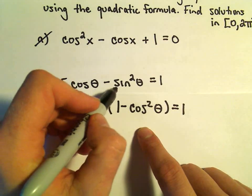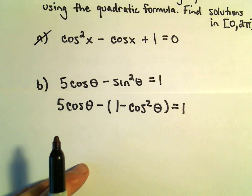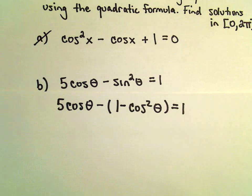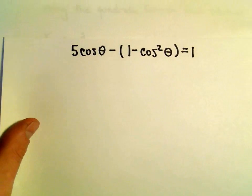We're just using an identity for the sine squared, that it's 1 minus cosine squared. And now we've got an equation that involves only cosines. So this is now what I'm going to start working on.